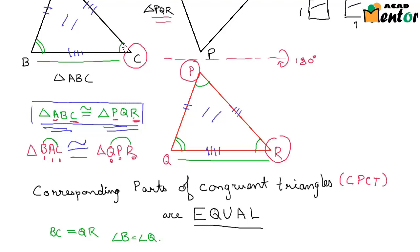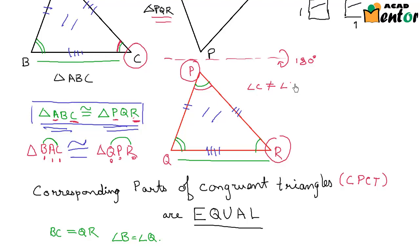Do you think angle C and angle P are equal? C does not correspond with P — C corresponds with R, and hence angle C will not necessarily be equal to angle P.